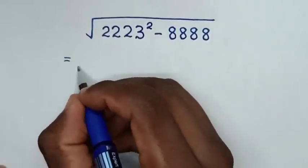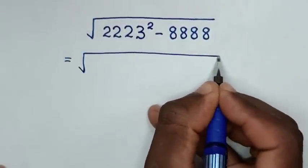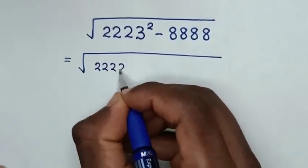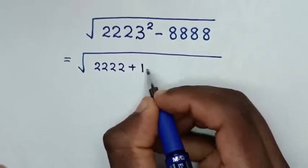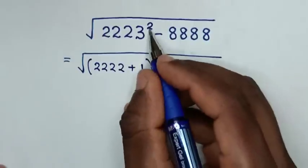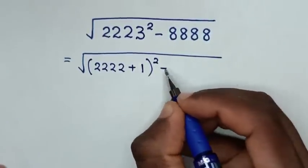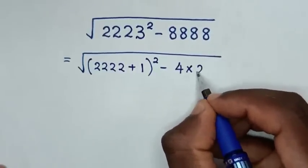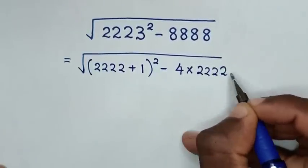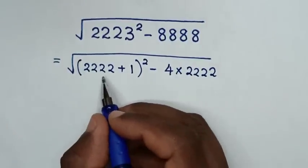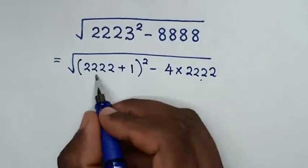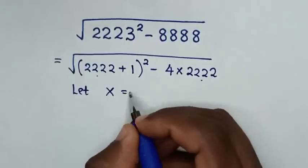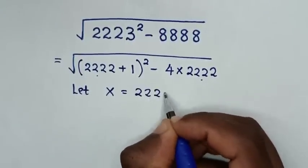So, this is equal to square root of — this is the same as (2222 + 1) bracket squared, then minus this is the same as 4 times 2222. Then, in the next step, 2222 is common. So, we will let x is equal to 2222.